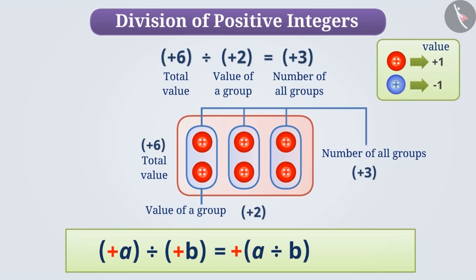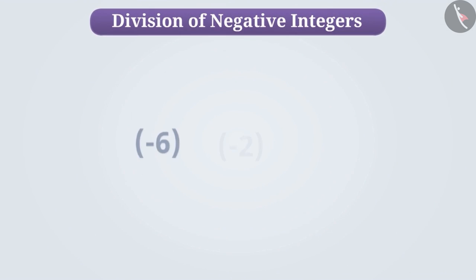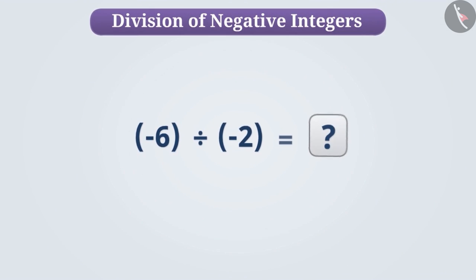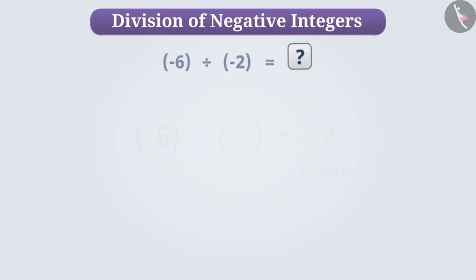Divisor cannot be zero here. Will the quotient obtained from the division of two negative integers also be positive? Let us know this by obtaining the quotient of minus 6 divided by minus 2.